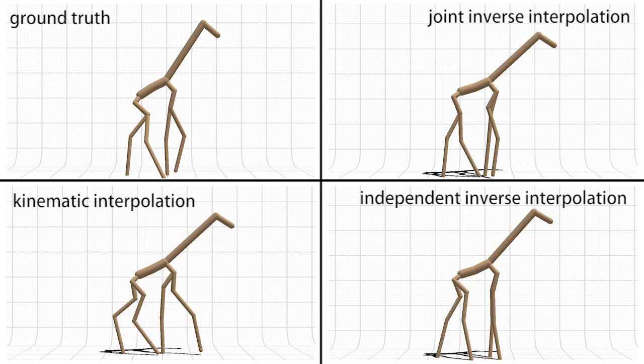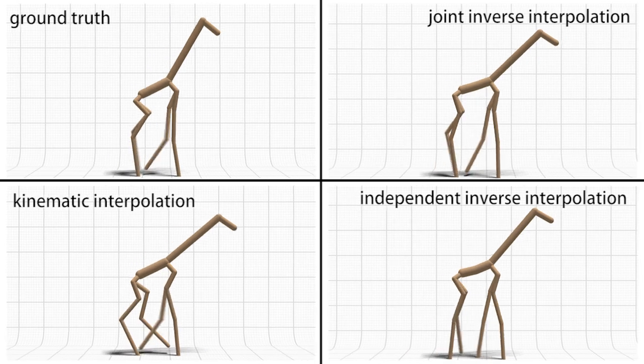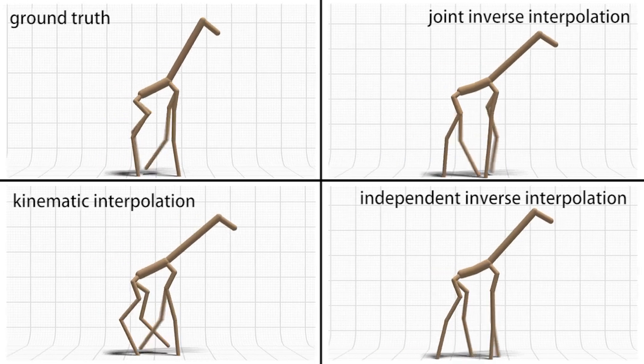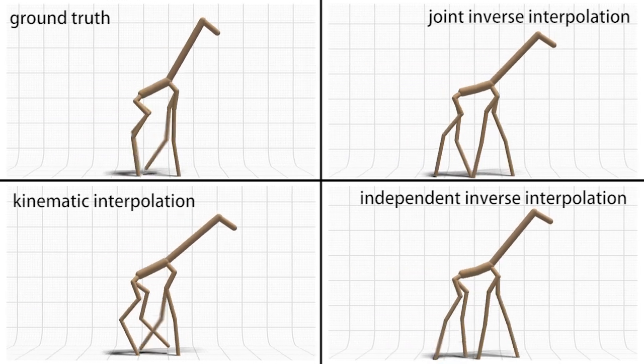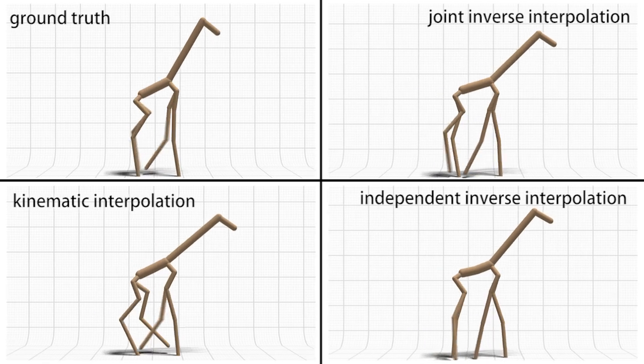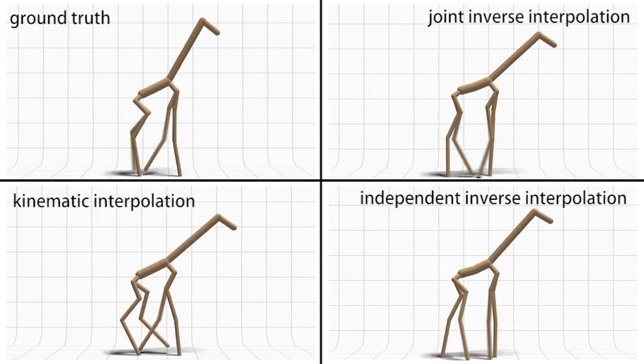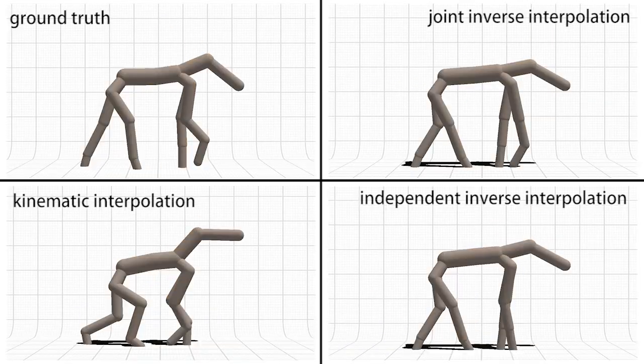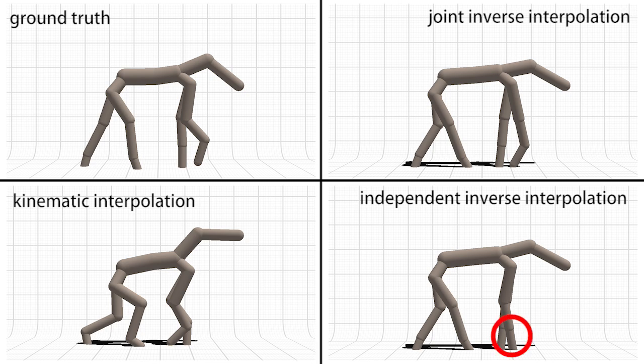Here, without Joint Inverse Optimization, the giraffe's front knee doesn't bend during its swing phase. Similarly, our approach better captures the correct lift of the elephant's front foot.